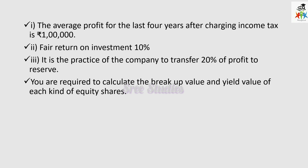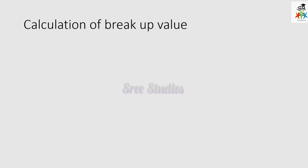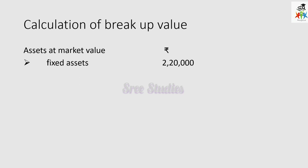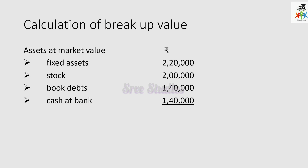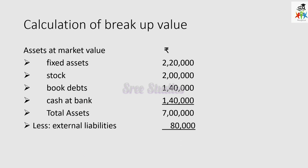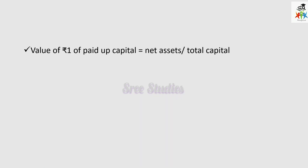Breakup value means net asset value. For calculation of breakup value, we take assets at market value: fixed assets, stock, book debts, and cash at bank — giving us a total asset figure. We then reduce the external liabilities, which is only one liability of 80,000, and that gives us the net asset.